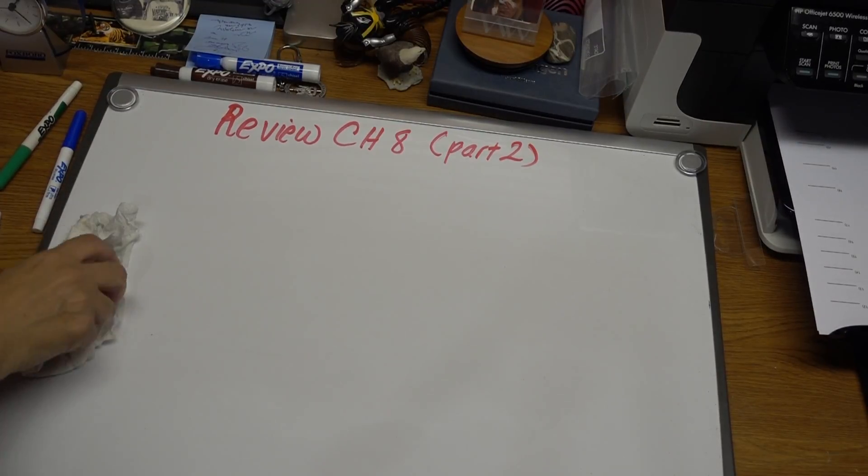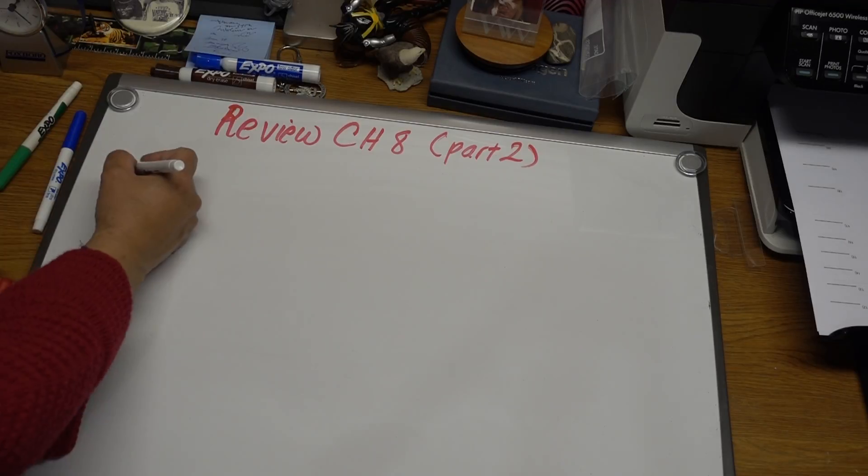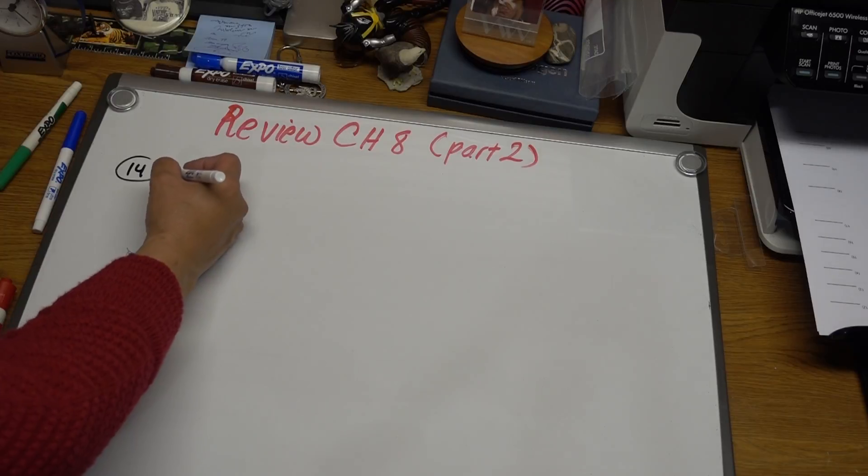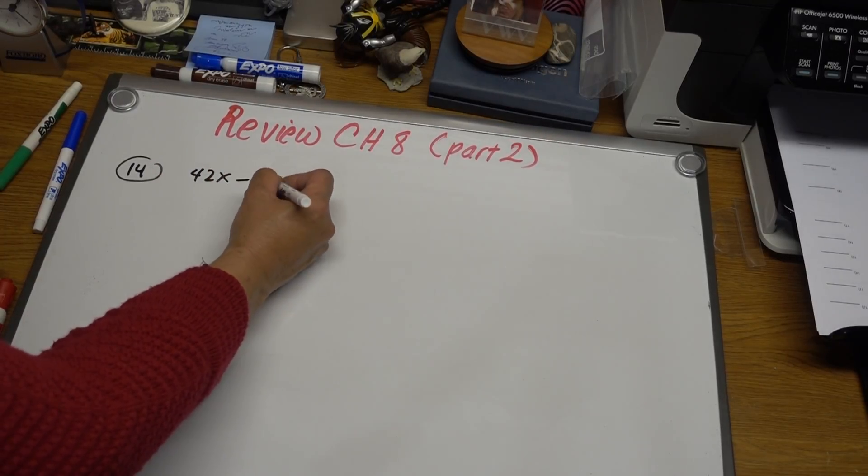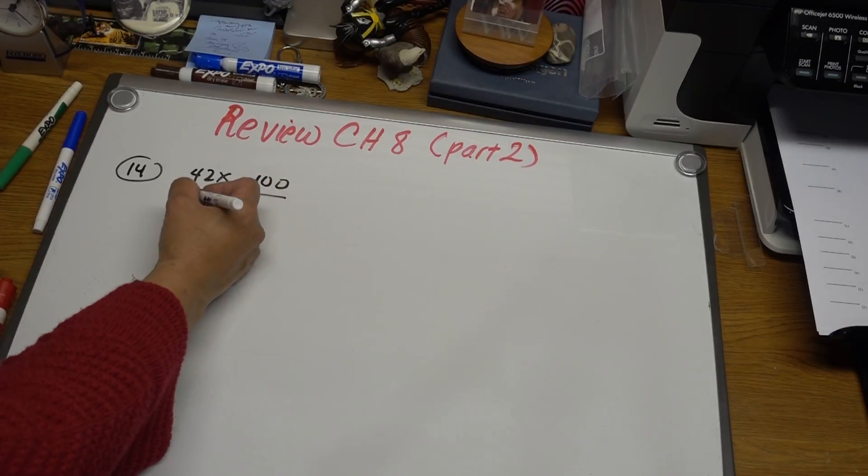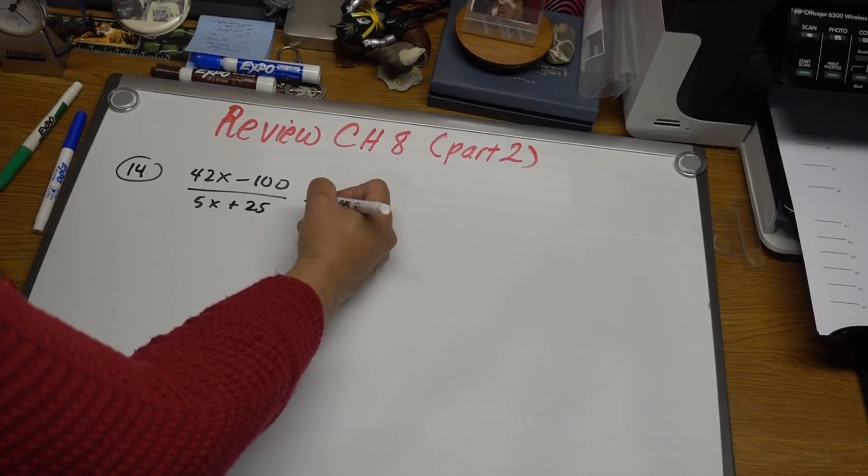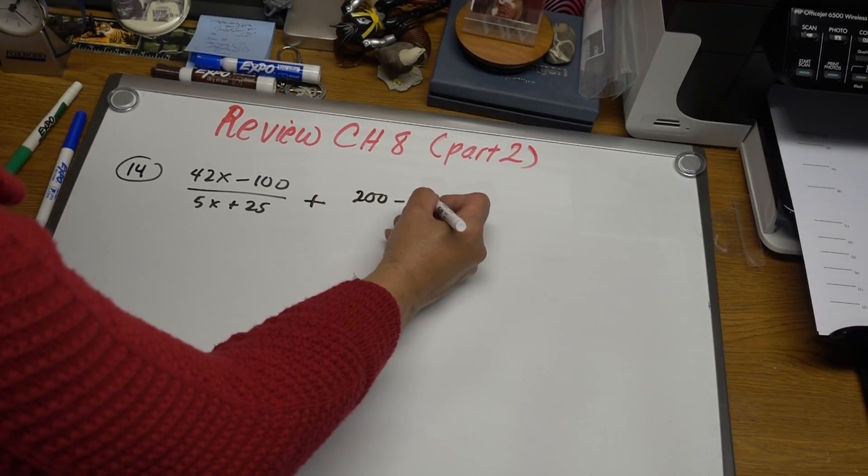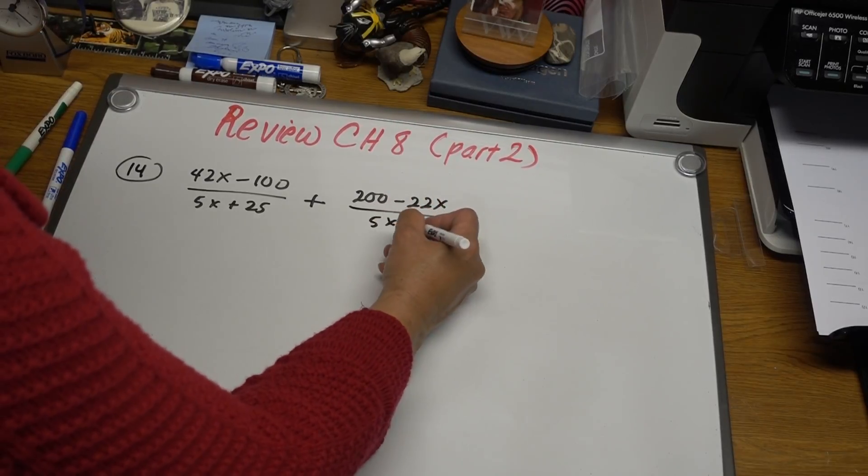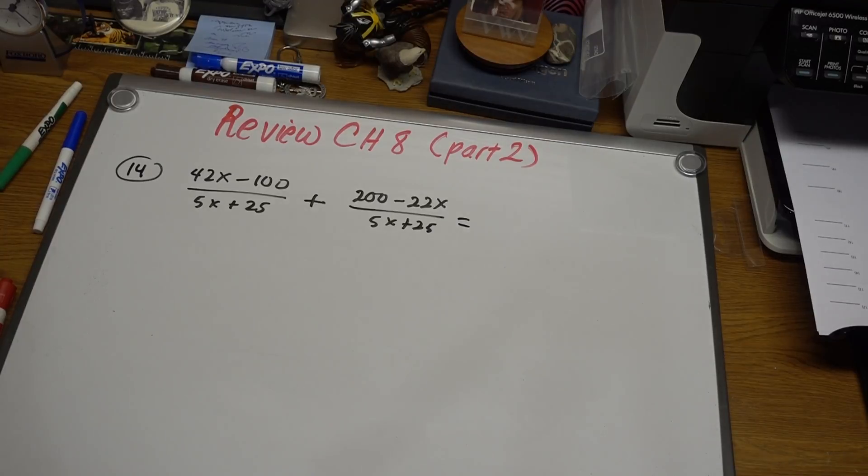Problem number 14 is an addition of two rational expressions: 42x minus 100 over 5x plus 25, plus 200 minus 22x over 5x plus 25. This one is going to be easy because we have the same denominator.